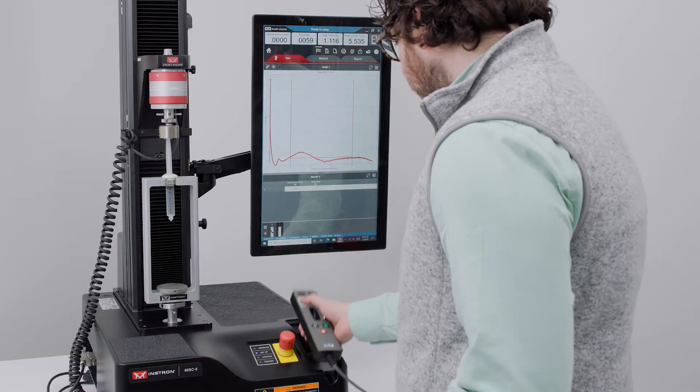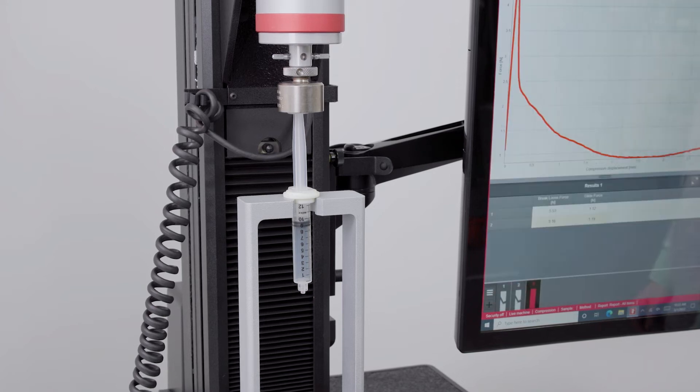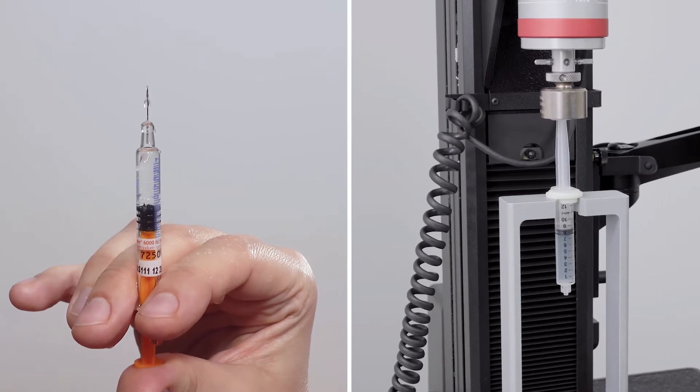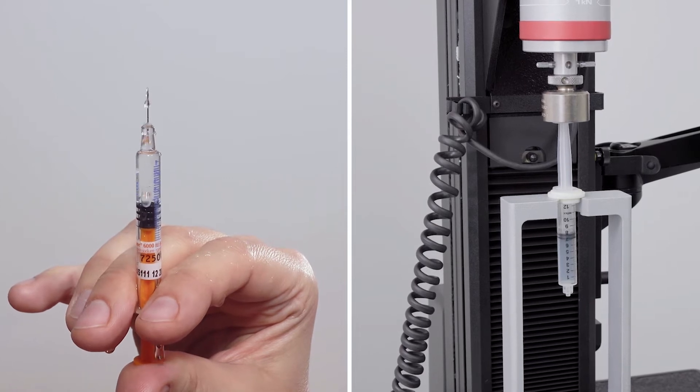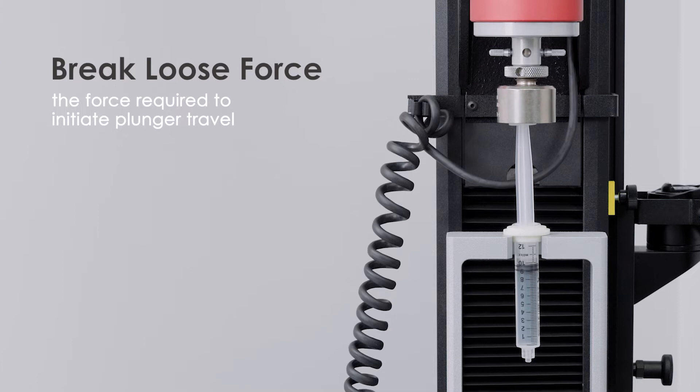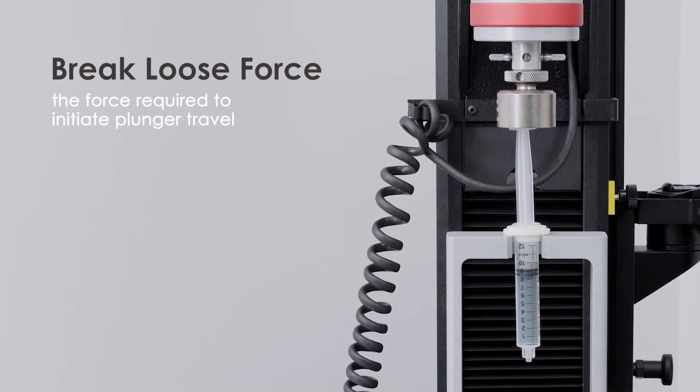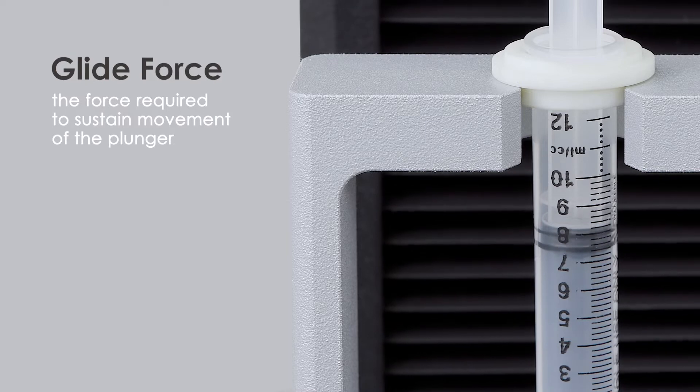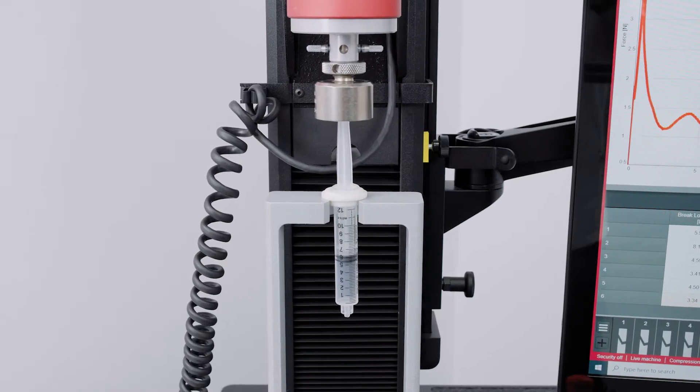Break loose and glide force testing is the most fundamental type of mechanical test that must be performed on all syringes. This test simulates the real-world use of the device in order to quantify the break loose force, or the force required to initiate plunger travel, and the glide force, or the force required to sustain movement of the plunger.